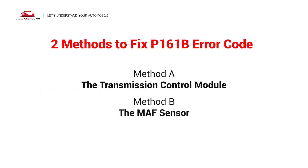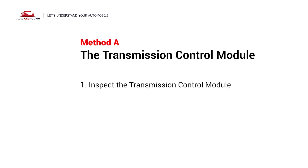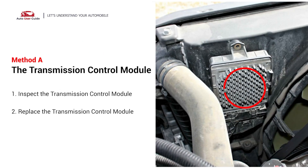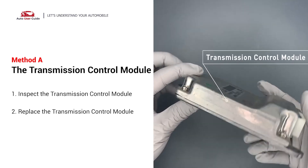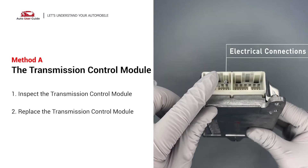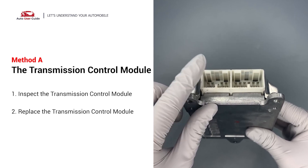Here are two simple DIY methods to fix the error code. Method A: the transmission control module. The transmission control module can often be found below the cover at the back of the transmission case, just below the engine control module's position. Visually check the transmission control module itself and its electrical connections for any damage. If damage is found, replace the transmission control module.